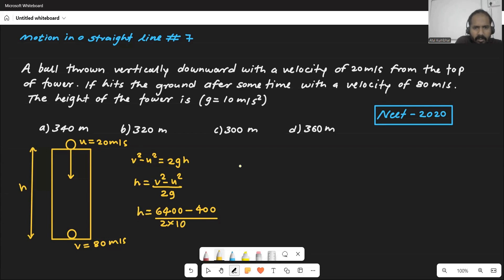This is a very simple question. So h will be 6400 minus 400, that will be 6000, divided by 20. The zeros will get cancelled, so the height of the building will be 300 meters.